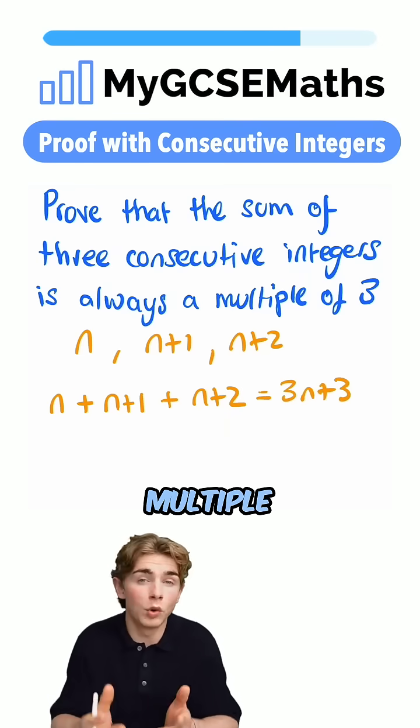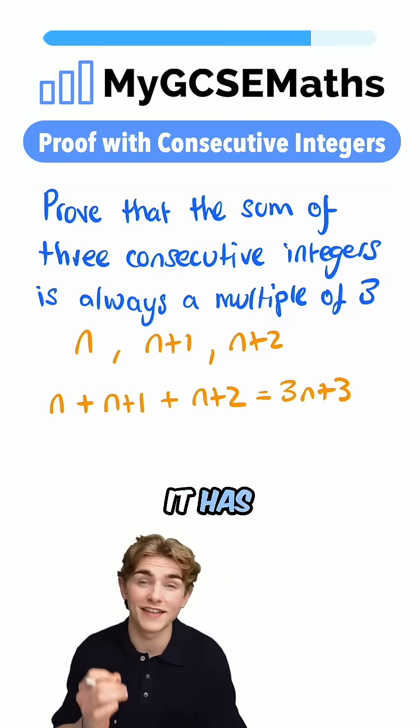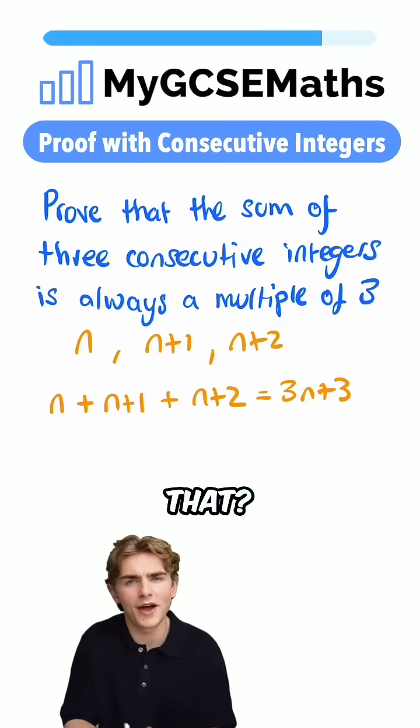Now, when it comes to showing that this is a multiple of three, we just need to show that it has a factor of three. How can we do that? We can factorize it.